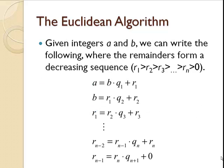The Euclidean algorithm says that if we start with two integers, a and b, we can write the following divisions. a equals b times q1 plus r1, and then we divide b by r1 to get b equals r1 times q2 plus a new remainder, r2, all the way down until we get zero for a final remainder.